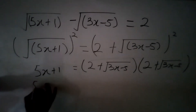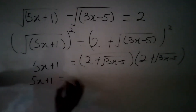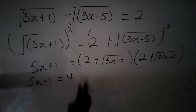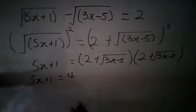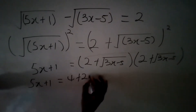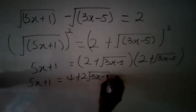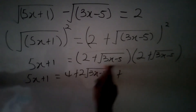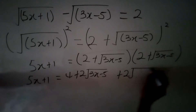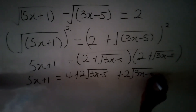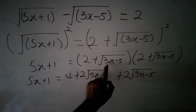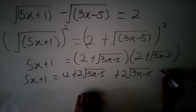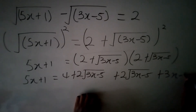We now get: 5x plus 1 equals 2 times 2, giving us 4; then 2 times the square root of 3x minus 5, giving us 2 root of 3x minus 5; plus root of 3x minus 5 times 2, giving another 2 root of 3x minus 5; and finally root of 3x minus 5 multiplied by root of 3x minus 5 simply gives us 3x minus 5.